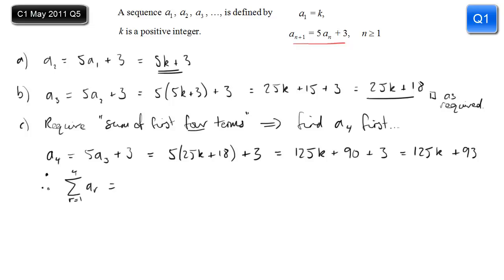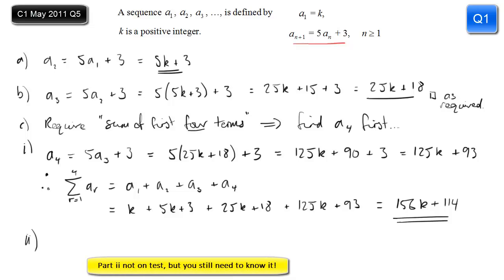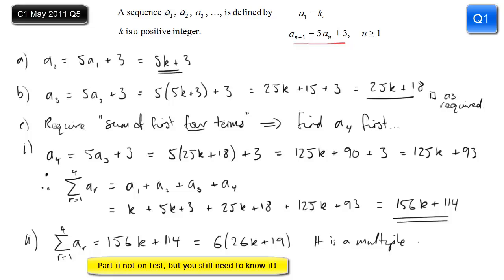What we want is the sum from r equals one to four of A_r — that's A1 plus A2 plus A3 plus A4. Add together all the answers worked out so far, and don't forget A1 which is k. That's our answer to part i. For part ii, to show this is divisible by six, we show it's a multiple of six: factorize it and it comes out as a multiple of six, therefore divisible by six.